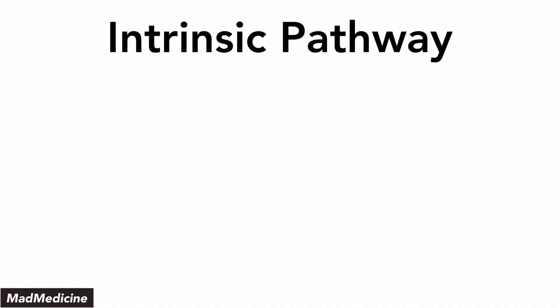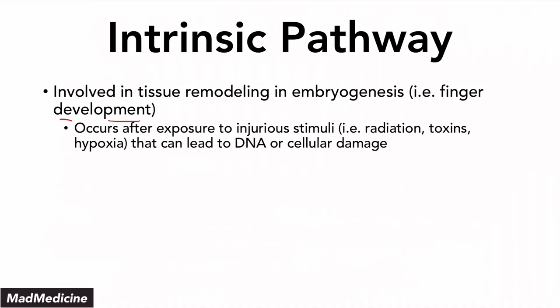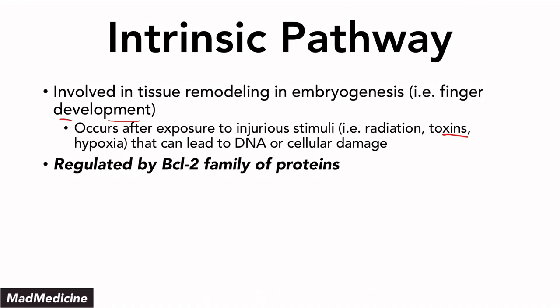Now we're going to talk about the intrinsic pathway. Remember, there are two pathways: the intrinsic and the extrinsic pathway of apoptosis. The intrinsic pathway is involved in tissue remodeling like in embryogenesis — you can see it with finger development. This pathway occurs after exposure to injurious stimuli like radiation or toxins that can lead to DNA or cellular damage. When this occurs, the intracellular pathway gets activated and kills off the cell. It is regulated by the BCL2 family of proteins. This is very high yield.